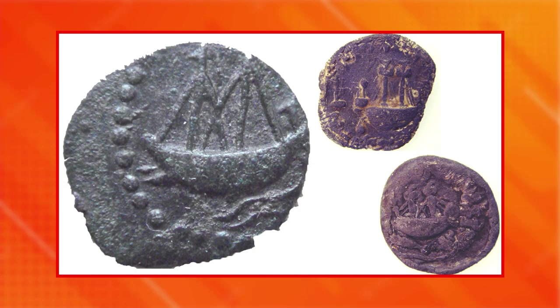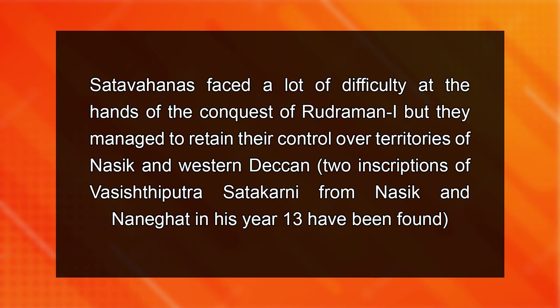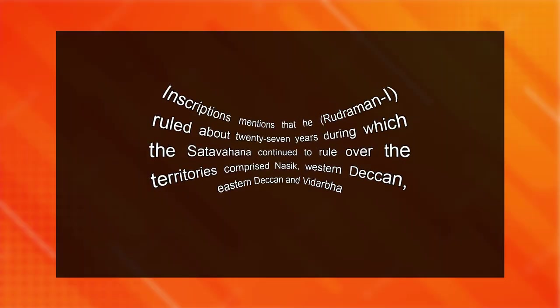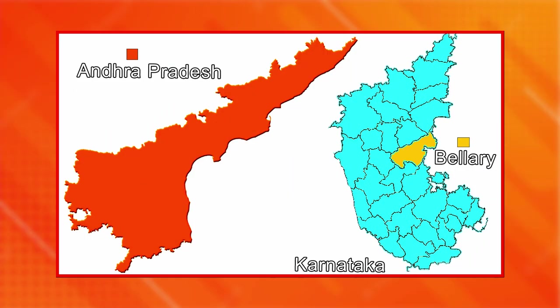Satavahanas faced a lot of difficulty at the hands of the conquest of Rudradaman I, but they managed to retain their control over territories of Nasik and western Deccan. Two inscriptions of Vashishtiputra Satakarni from Nasik and Naneghat in his year 13 have been found. Among the later Satavahana kings, the name of Yajnashri Satakarni is prominent. His inscriptions mention that he ruled for about 27 years, during which the Satavahanas continued to rule over territories comprising Nasik, western Deccan, eastern Deccan and Vidarbha. He has been mentioned as the last of the powerful kings of the Satavahana kingdom, and all his successor kings ruled over a much reduced territory, confined to Andhra Pradesh and the Bidar area of Karnataka.